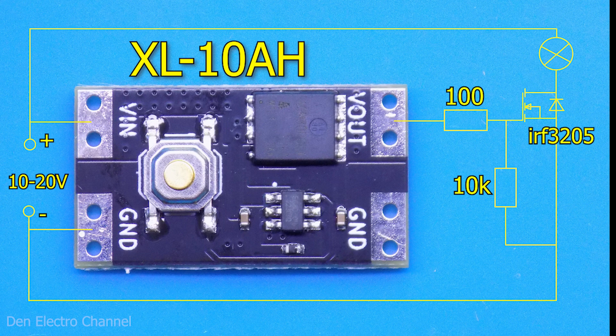In order for this module to be able to control a very powerful load that consumes more than 10 amperes, the output of the module can be loaded with a transistor or relay. In the diagram, I showed a simple example using a field effect transistor. Instead of a light bulb, you can put any load that will consume tens of amperes. In this case, all the huge current will flow through the transistor.